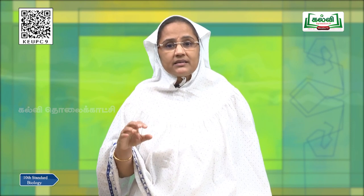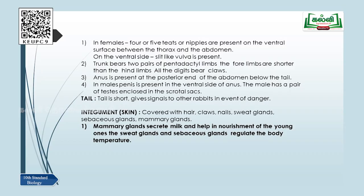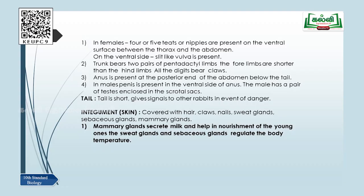Integument means the skin. The skin of the rabbit is covered with soft hair like fur — similar to a teddy bear. The skin has claws, nails, and sweat glands from which sweat is released. All mammals sweat and the rabbit is also a mammal. The sebaceous glands produce oil. Together, the sweat glands and sebaceous glands maintain the body temperature of the rabbit. The mammary glands are connected to the teats and help in the secretion of milk to nourish the young ones.